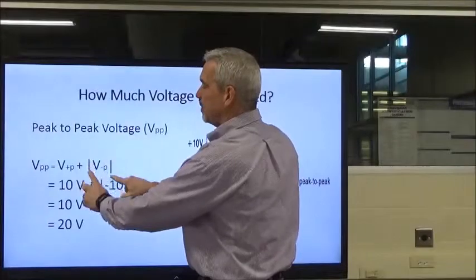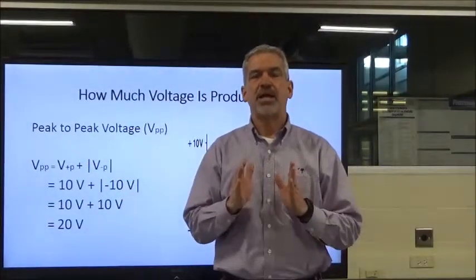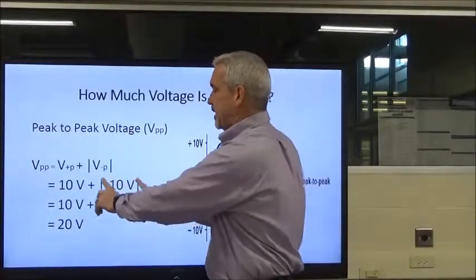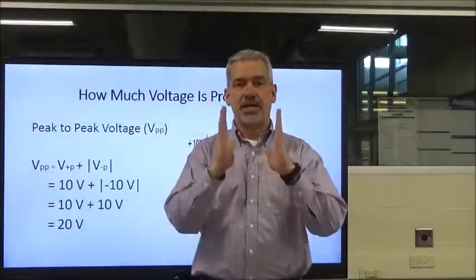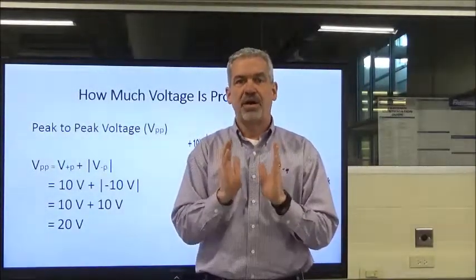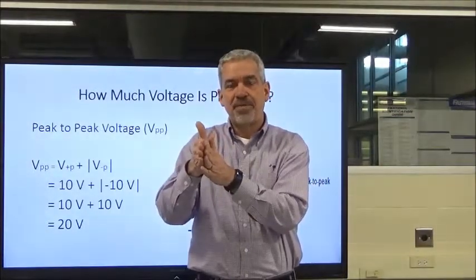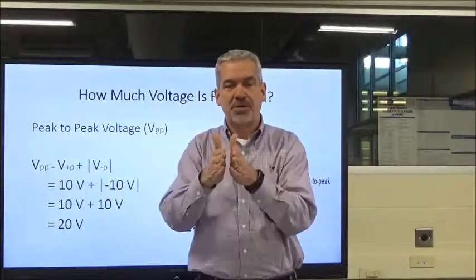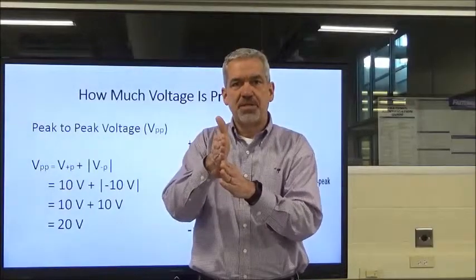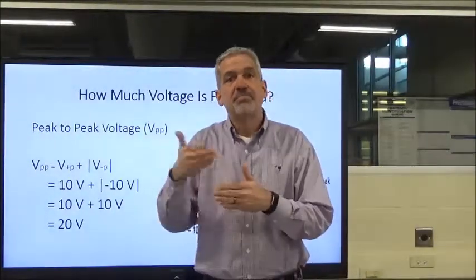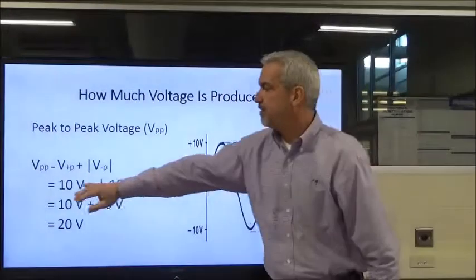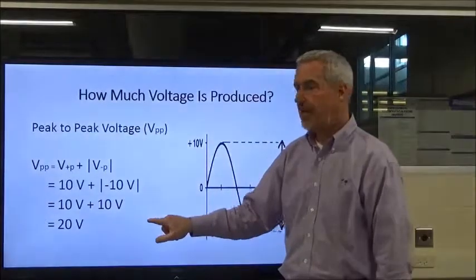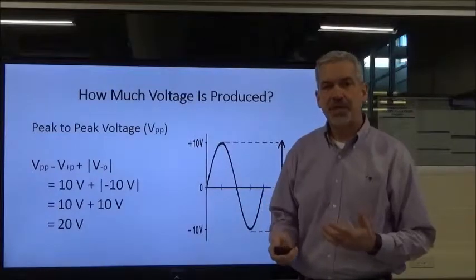Now, when you see these vertical lines like this, that indicates you're looking at the absolute value of that number. Going back to some math — anytime you see the absolute value signs and a negative number, say negative three inside those vertical lines, you're looking at the absolute value of negative three. That's the number of spaces from zero that number is. Negative three is three spaces from zero regardless of sign, so the absolute value of negative three is positive three. In our example, we've got ten volts plus the absolute value of negative ten, which is positive ten. So our peak-to-peak voltage is 20 volts. That's our peak voltage and our peak-to-peak voltage.